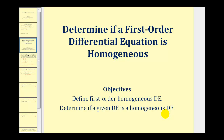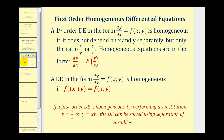Welcome to a lesson on determining if a first order differential equation is homogeneous. A first order DE in the form of dy/dx equals f of x comma y is homogeneous if it does not depend on x and y separately, but only the ratio of x to y or y to x.